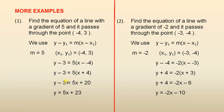Removing the grouping symbols we get y minus three equals five x plus twenty. Adding three to both sides gives us y equals five x plus twenty three. We can see that the gradient is five and the y intercept is twenty three.